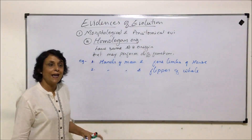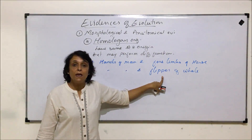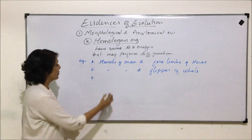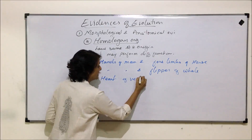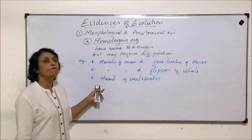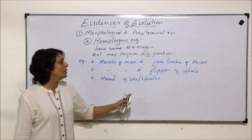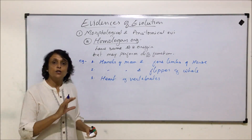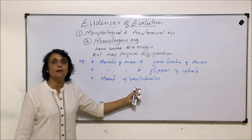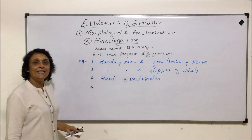In the whale flipper example, origin is the same and they are performing different functions. Another example is the hearts of vertebrates. We know vertebrate hearts evolved slowly — in fishes the heart was two-chambered, in amphibians three-chambered, in most reptiles three-and-a-half-chambered, and in birds and mammals it is four-chambered. Structure-wise there is some difference in compartments, but the tissue giving rise to the heart in all vertebrates is the same, so vertebrate hearts also come under homologous organs.